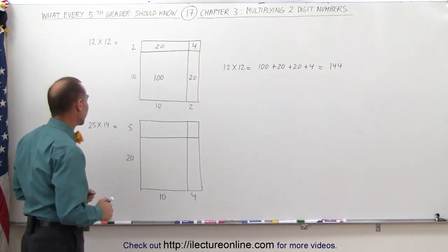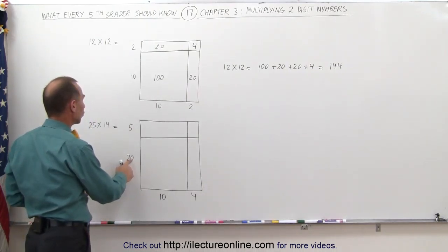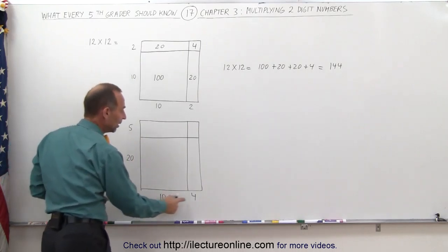Let's try the numbers 25 and 14. 25 can be written as 20 and 5, 14 can be written as 10 and 4.